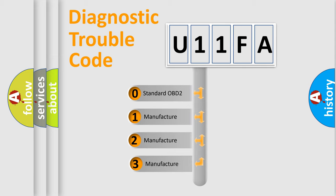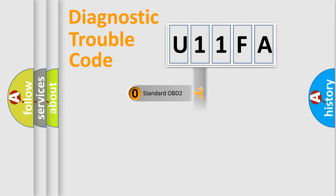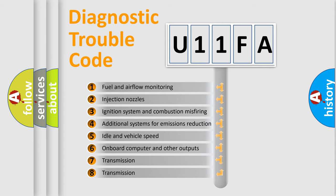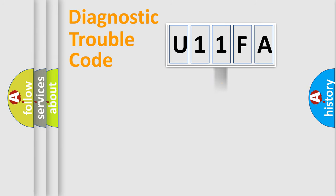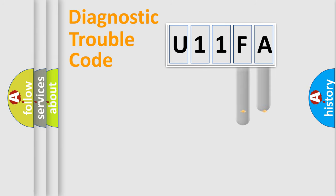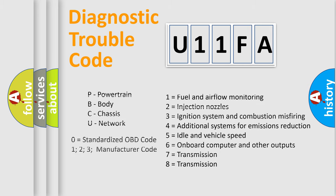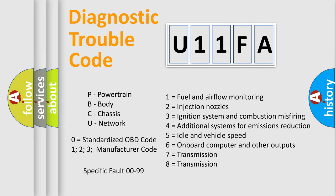If the second character is expressed as zero, it is a standardized error. In the case of numbers 1, 2, or 3, it is a manufacturer-specific error. The third character specifies a subset of errors. This distribution is valid only for the standardized DTC code. Only the last two characters define the specific fault of the group.